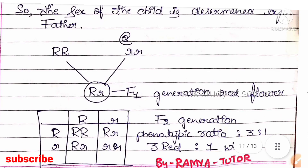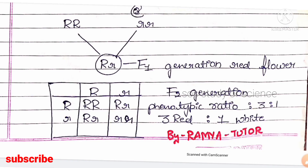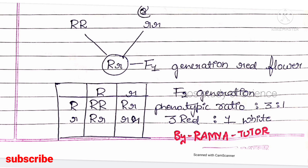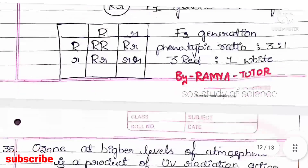Optionally, you can write the Punnett square for a monohybrid cross. Here they've asked about red flower and white flower. When a red flower crosses with a white flower, the dominant trait — red flower — is expressed. You need to draw the Punnett square for the F2 generation. The F2 generation ratio is 3:1, that is 3 red and 1 white flower.